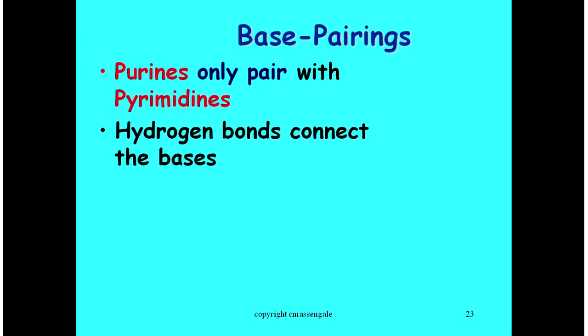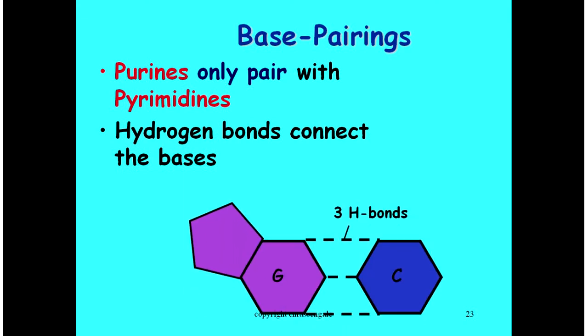Purines can only pair with pyrimidines across the DNA ladder. Hydrogen bonds are going to connect those bases together. You should be up through number 25 with hydrogen bonds. Here you're seeing guanine, one of our purines, bonding with cytosine, one of our pyrimidines. They don't just use one hydrogen bond to bond to each other. These guys actually use three hydrogen bonds.